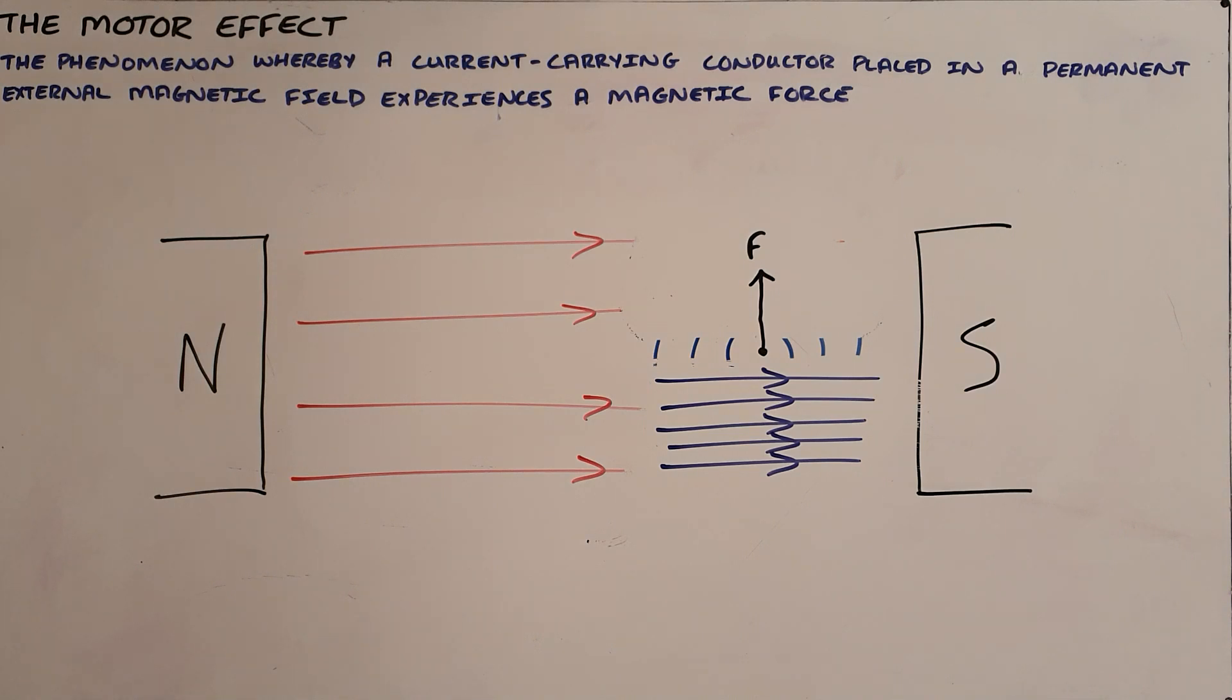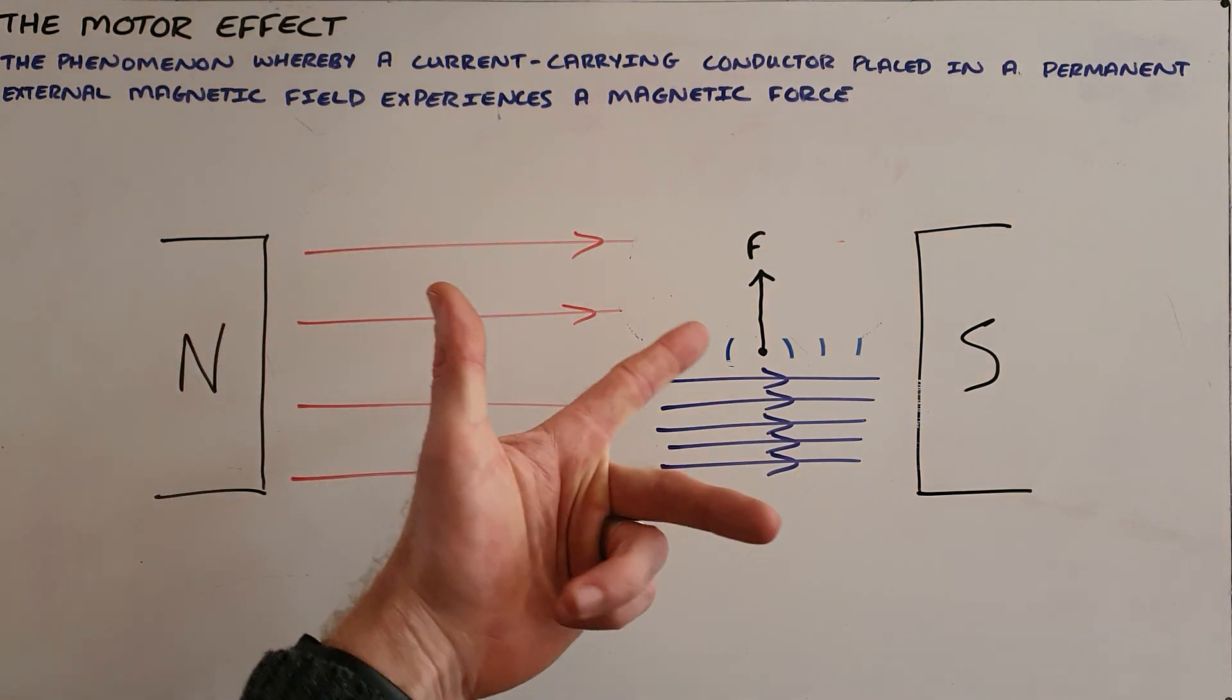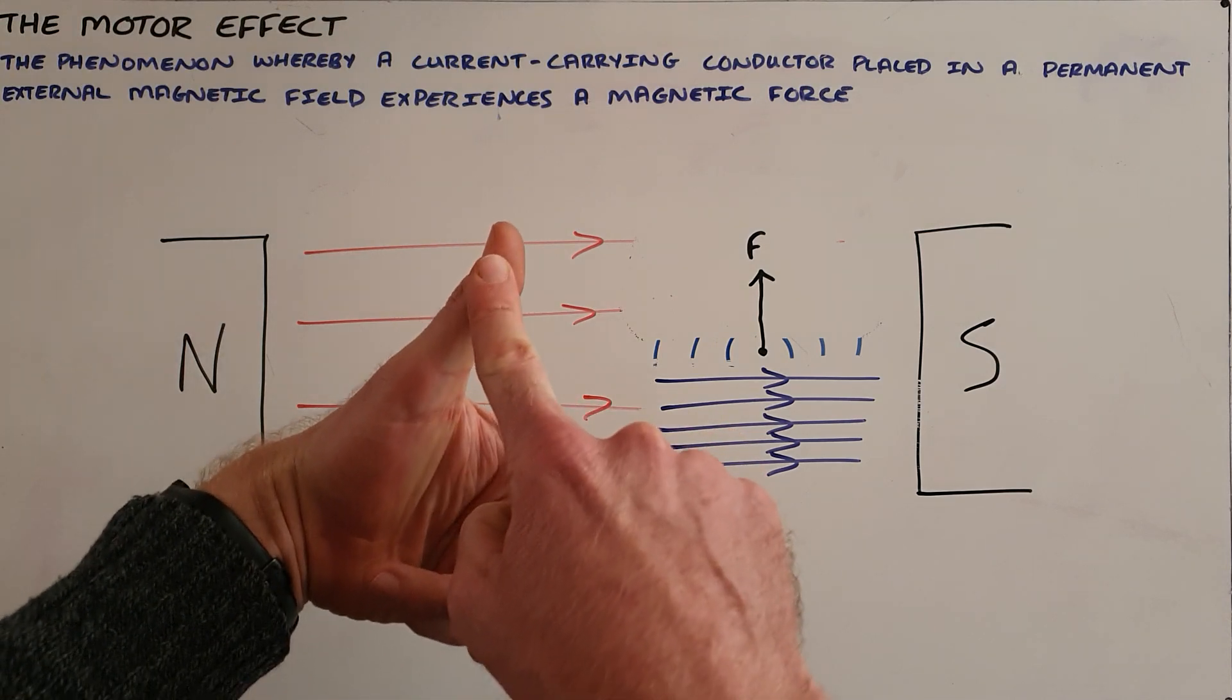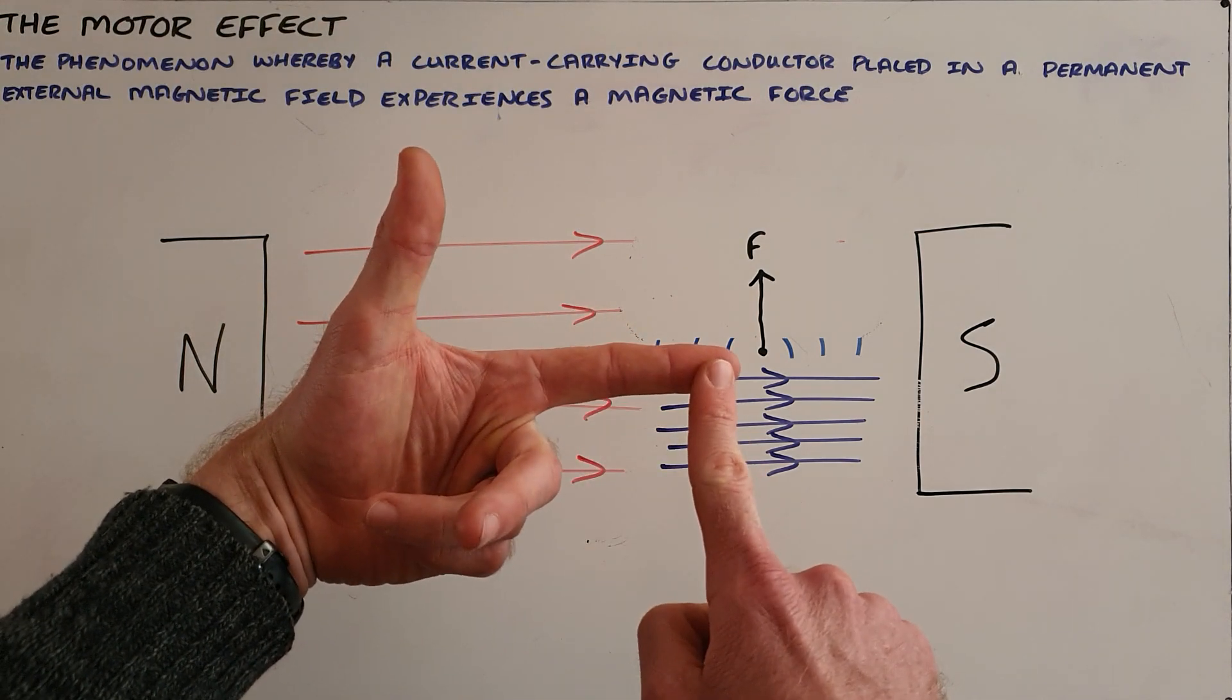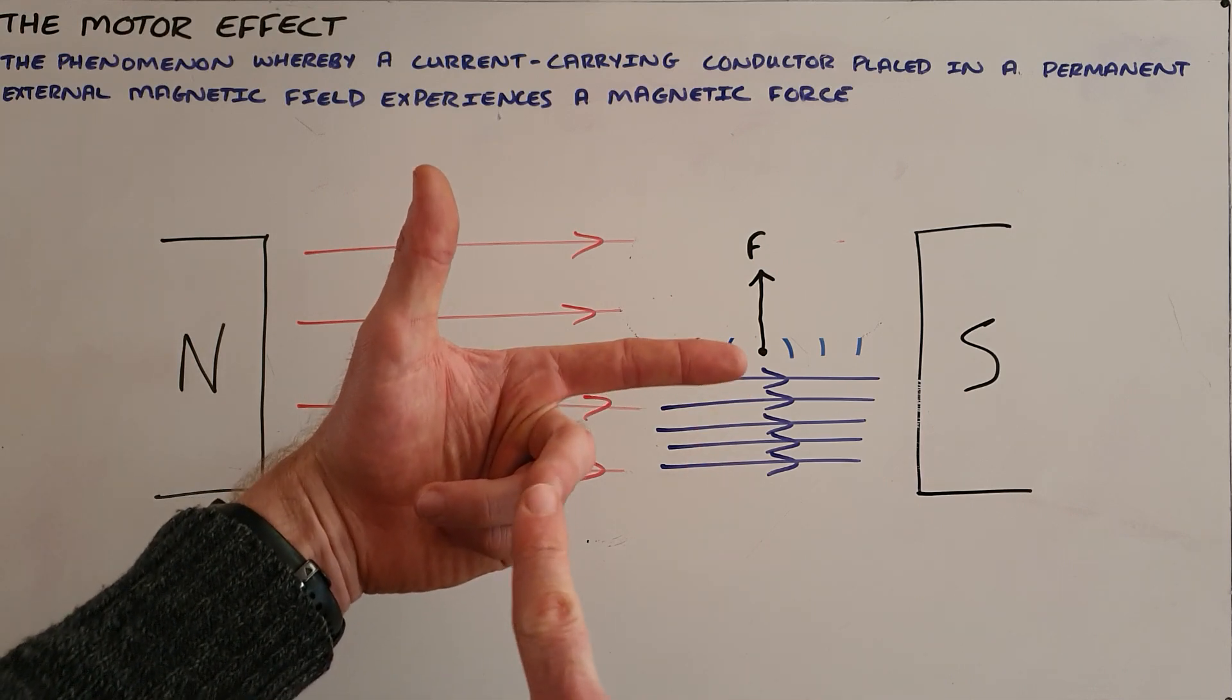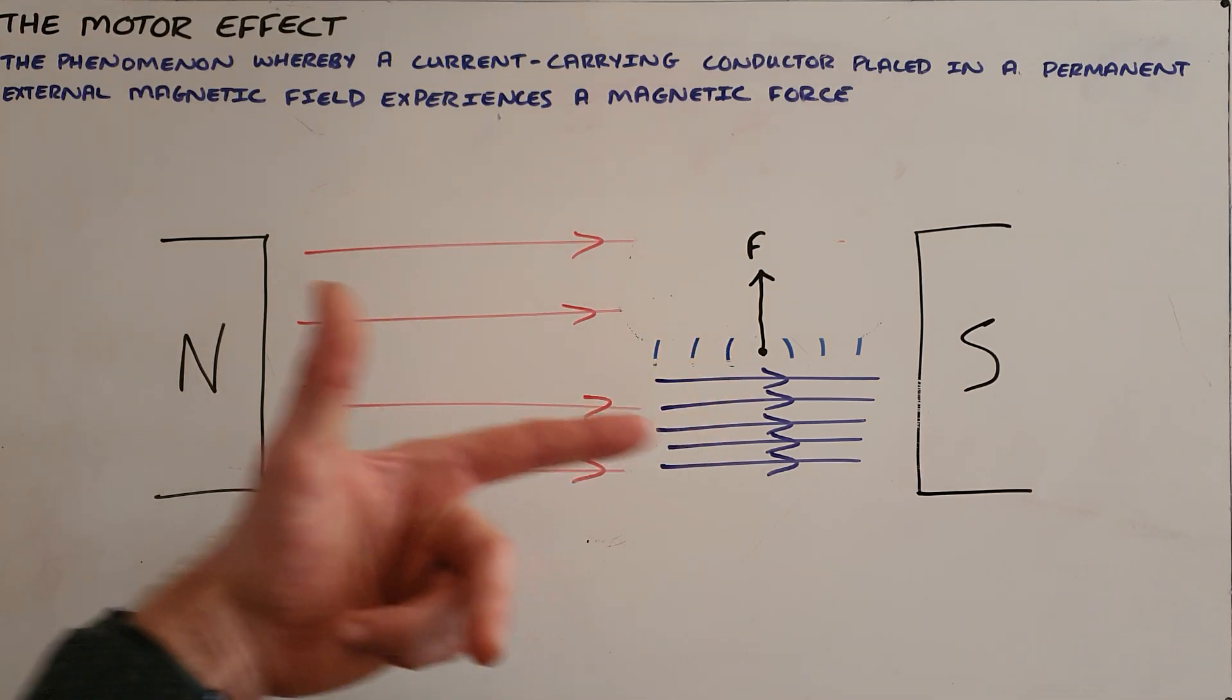We can also use Fleming's left hand motor rule to determine this direction. The left hand motor rule is used with our fingers placed perpendicular to each other where our thumb represents the force, our index finger represents the magnetic field, and our middle finger represents the current.